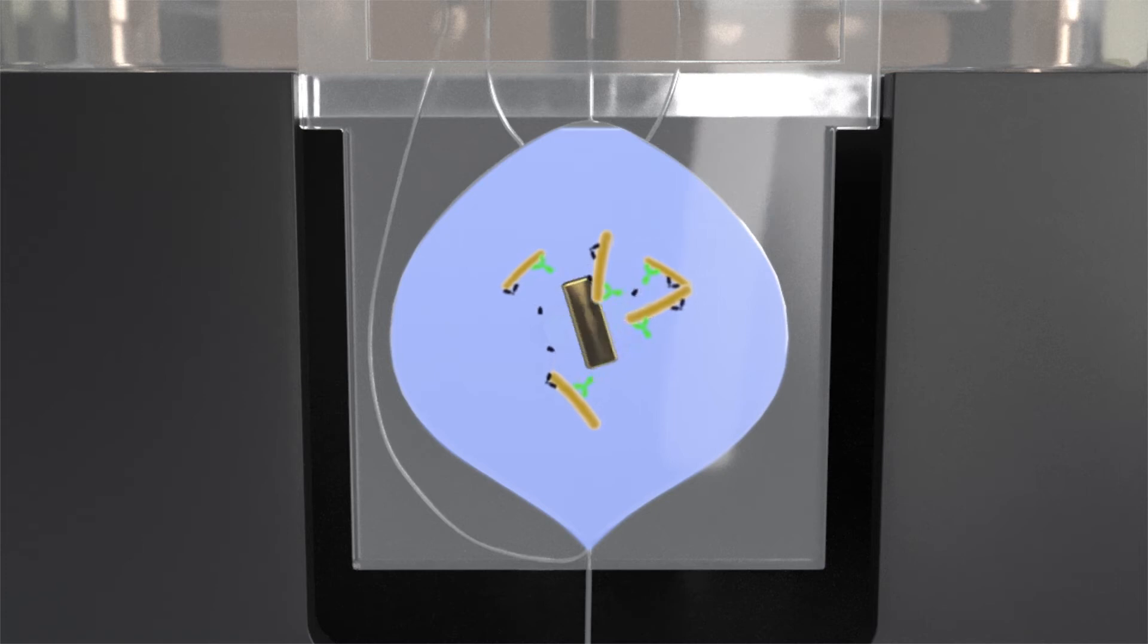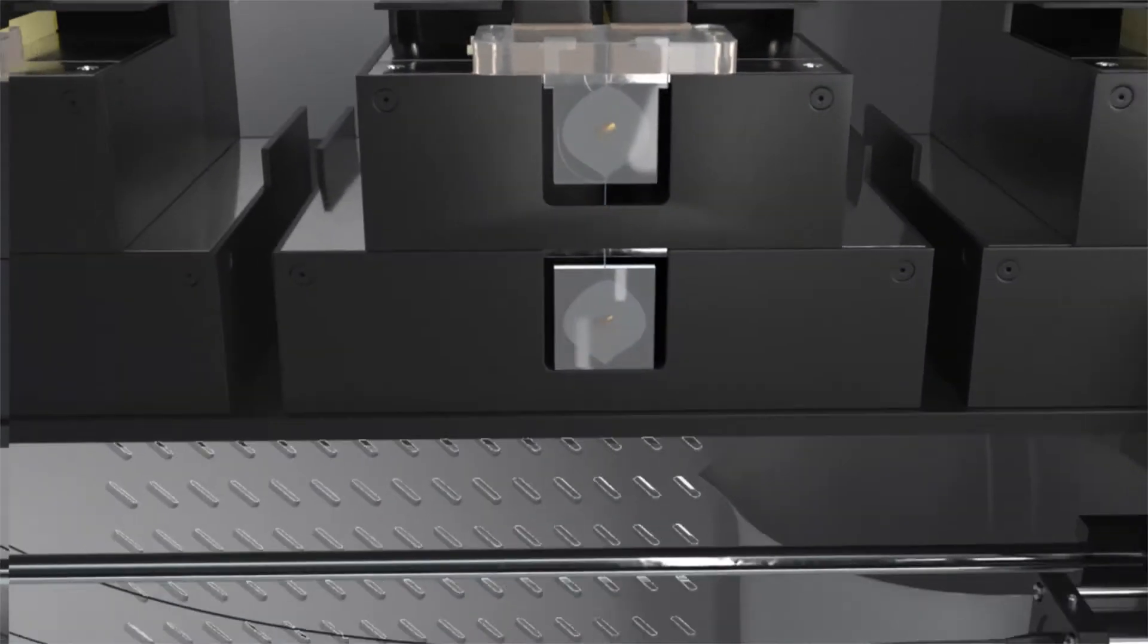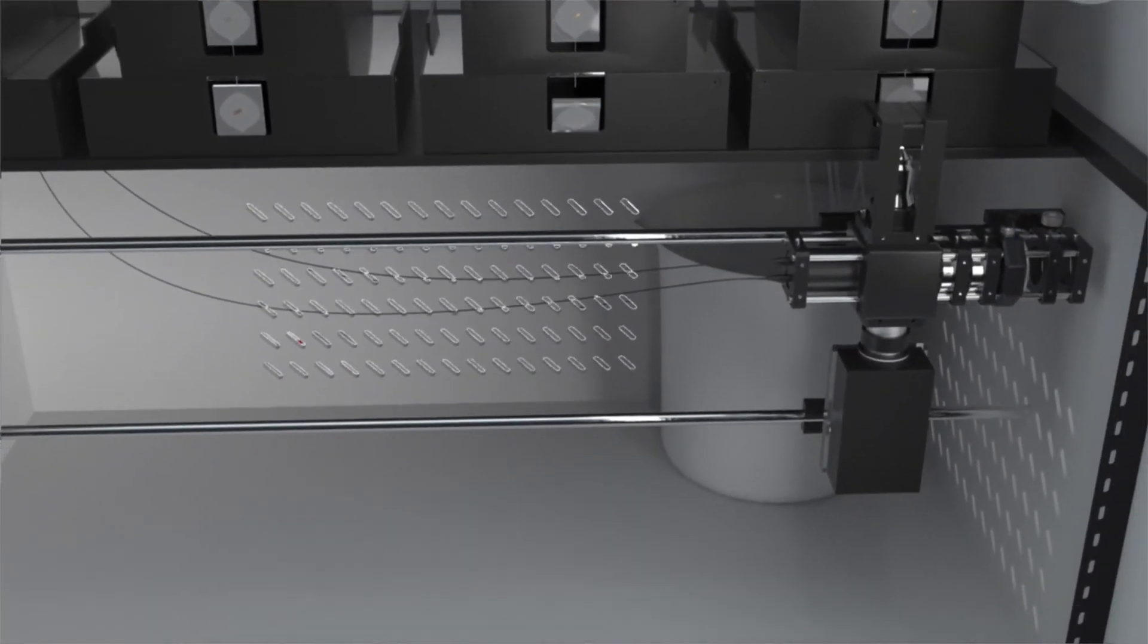After the supernatant extraction, an elution buffer and a release buffer are added and the sample is mixed again. During this process, microorganisms are detached from the magnetic antibodies. Finally, the processed sample is transferred to the reading cartridge.